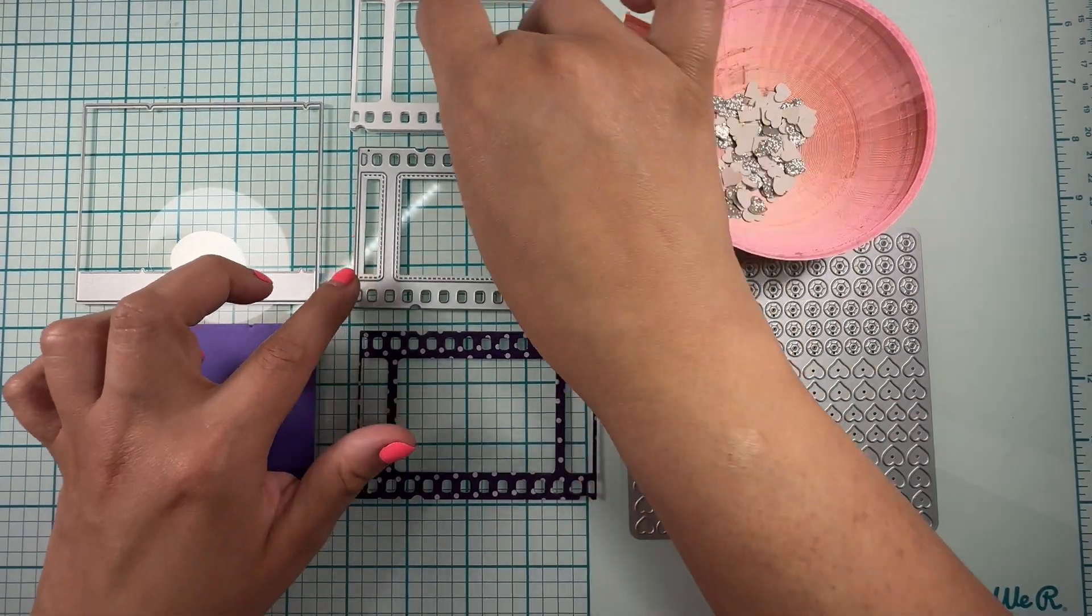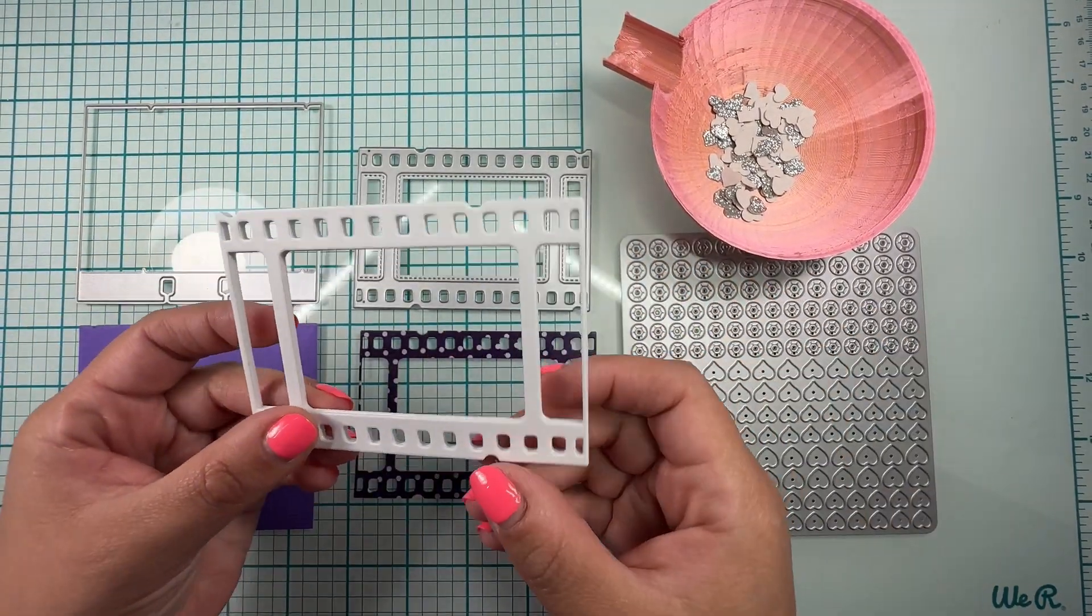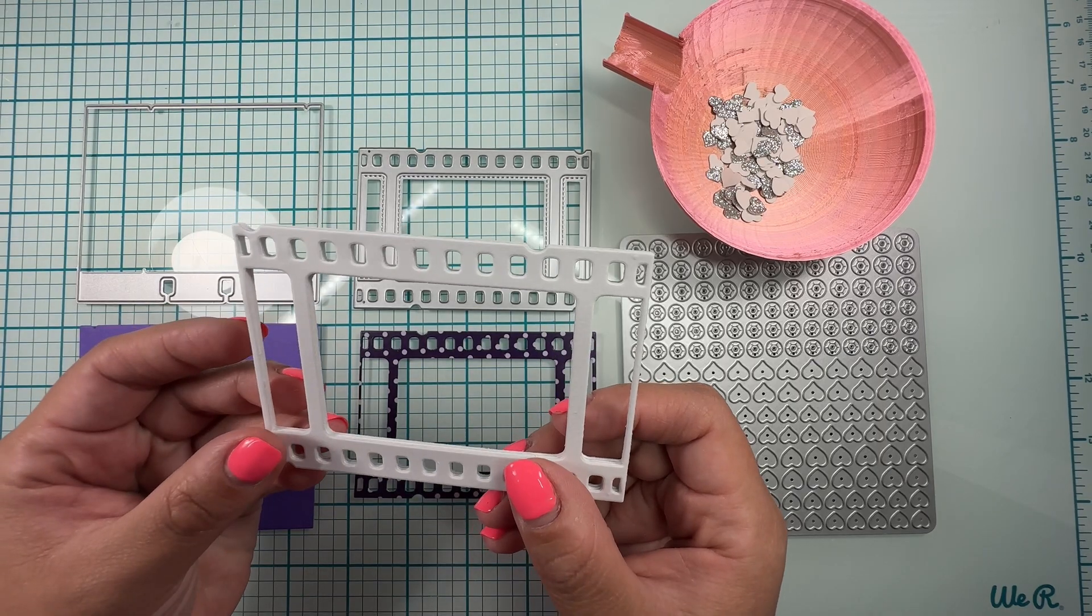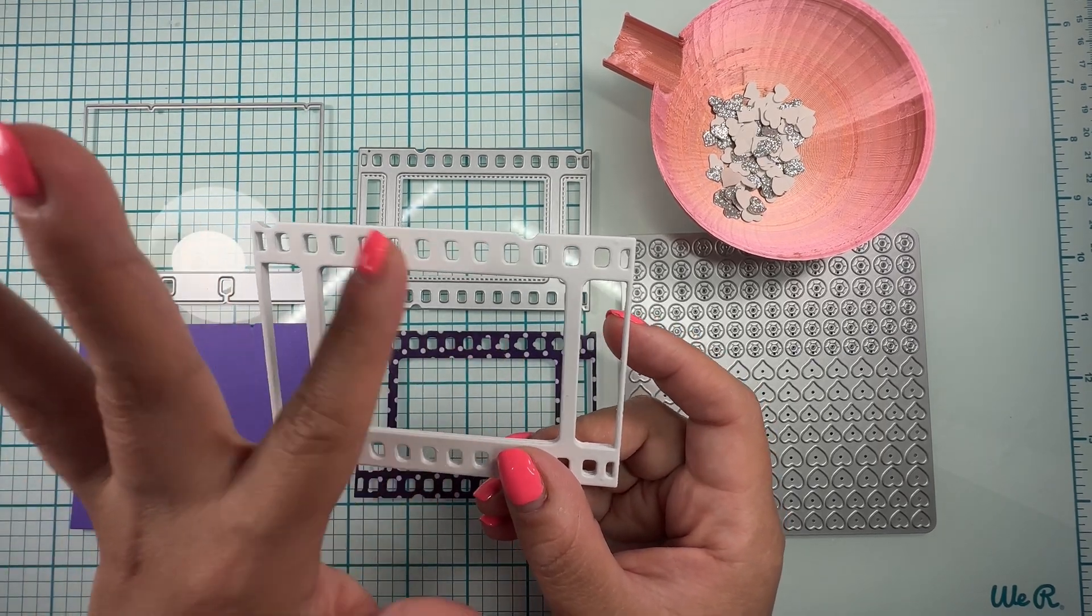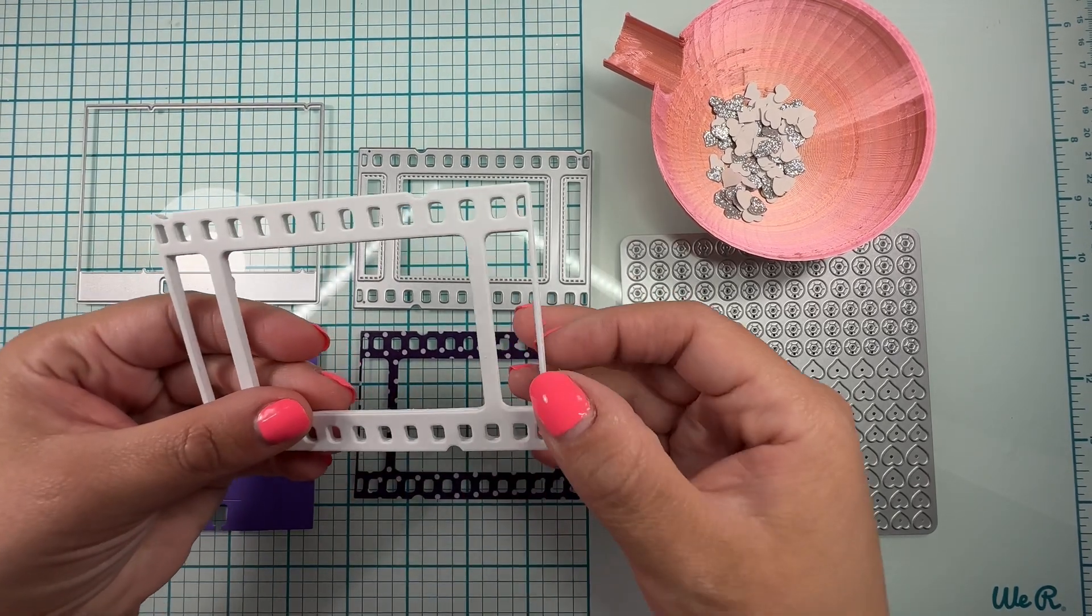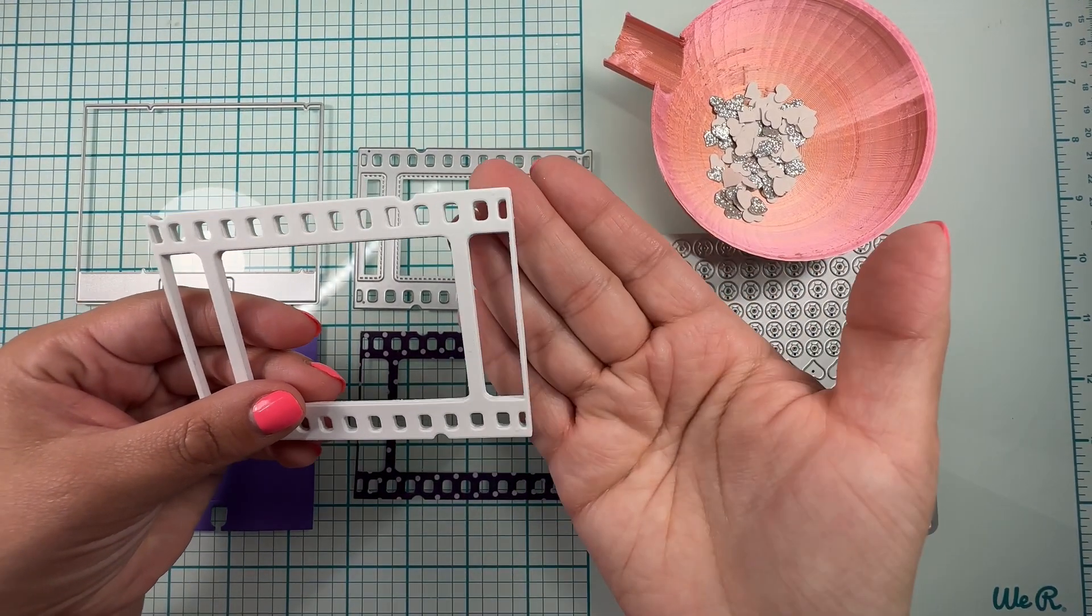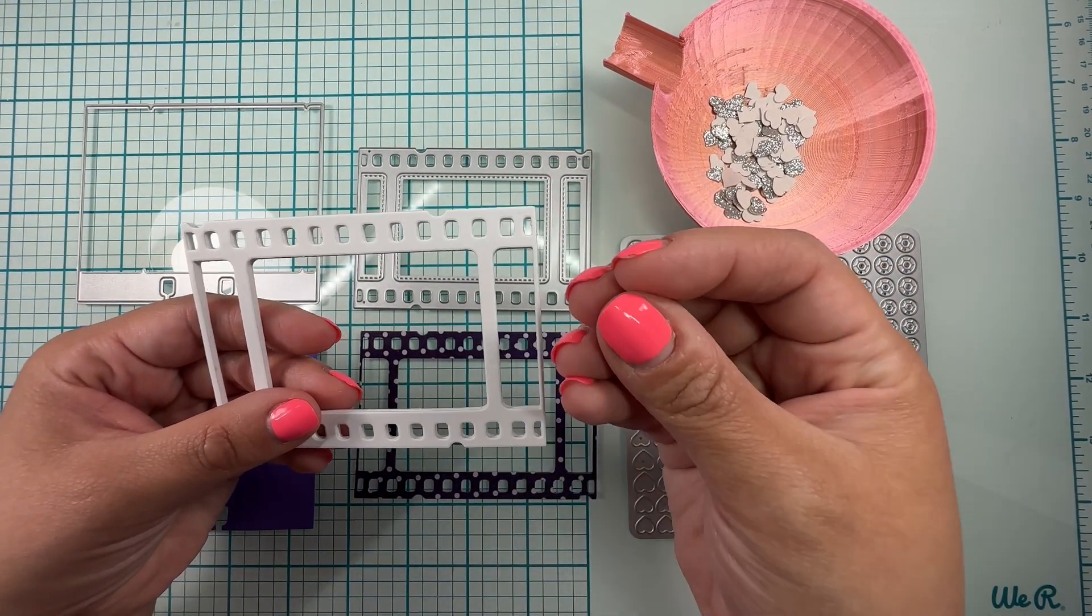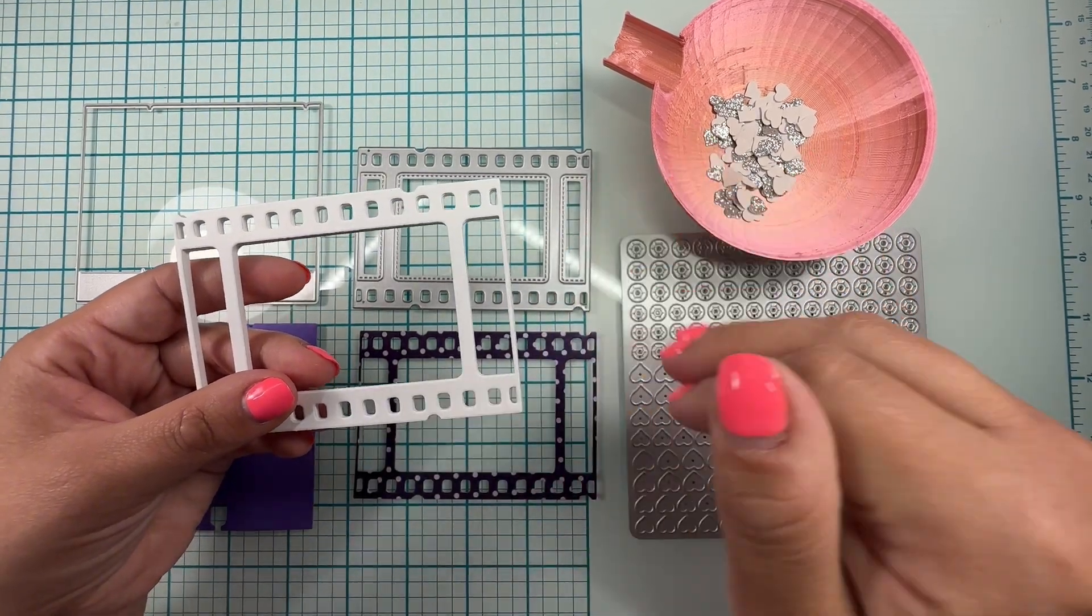Then from the same film strip - since we're making a shaker card and I wanted to make this part the shaker - these here are so thin that you cannot put a foam tape underneath to raise it so you can do the sequins or whatever it is you're putting.